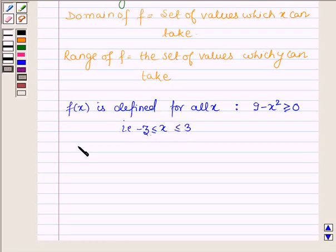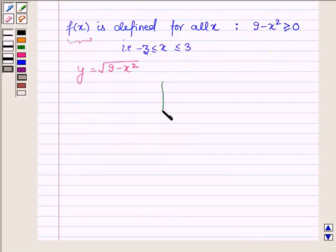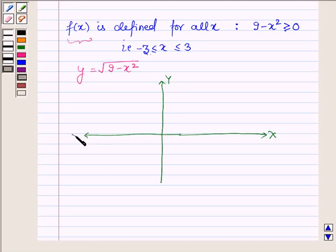Now let us draw the graph of y equals square root of 9 minus x squared to find the range of f(x). This is x axis, this is y axis, this is x dash, this is y dash.